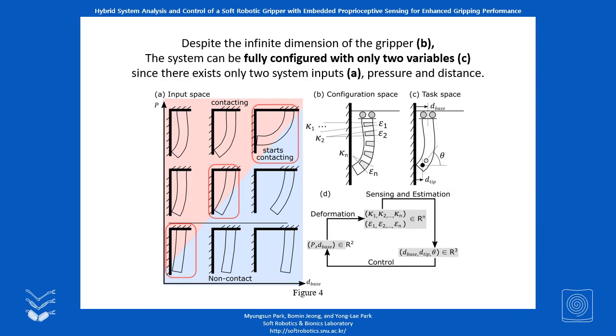While the actuators interact with an object of unknown size, the two system inputs—the distance from the object and the pneumatic pressure on the actuator—determine the system's configuration as shown in figure A. Therefore, despite the actuator's infinite degree of freedom, it is enough to estimate two variables for controlling the system.